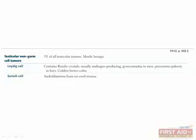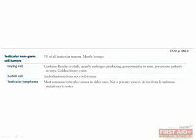Non-germ cell tumors make up the other 5% of testicular tumors, and thankfully they're mostly benign, with the exception of testicular lymphoma. They can be composed of Leydig cells or Sertoli cells, in which case they're called sex-cord stromal cell tumors. Leydig cells secrete androgens and can cause precocious puberty in boys; in some cases they can also secrete estrogen and cause gynecomastia — classically these tumors have a golden brown color. Sertoli cell tumors can also secrete estrogen, causing gynecomastia and impotence. Testicular lymphoma is the most common testicular cancer in men over 60, almost always non-Hodgkin's lymphoma, and the most common type is diffuse large B-cell lymphoma.